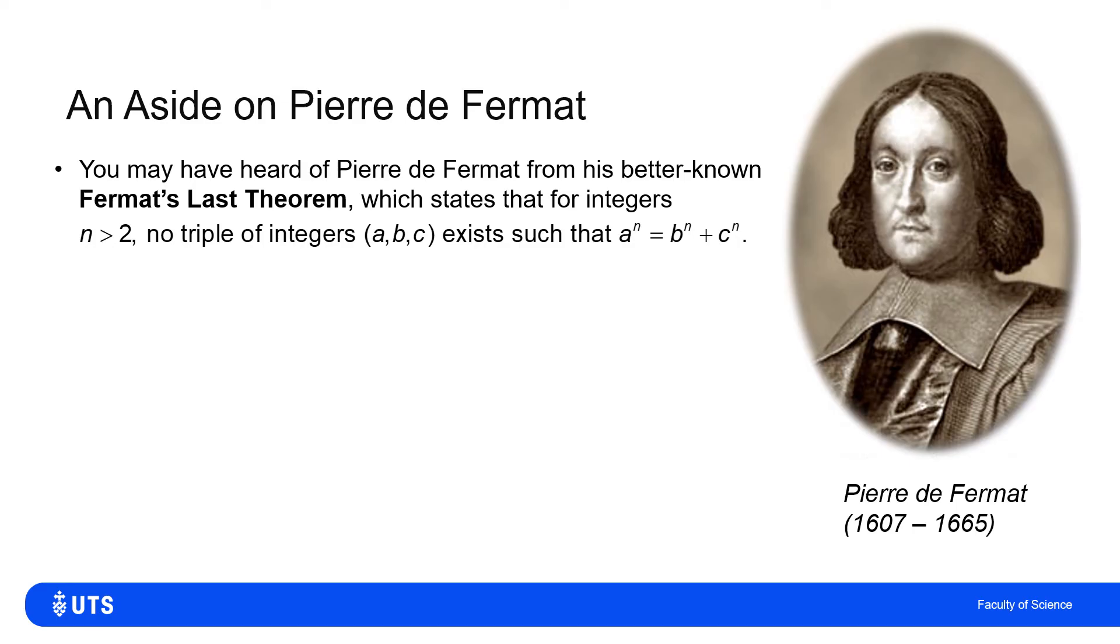Well, Fermat's last theorem says that there will never be any three integers a, b and c, such that a to the n is equal to b to the n plus c to the n for any integer values of n larger than two.